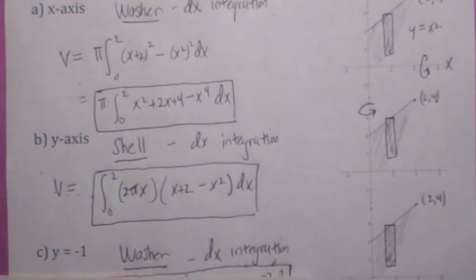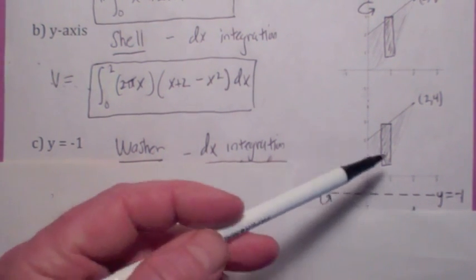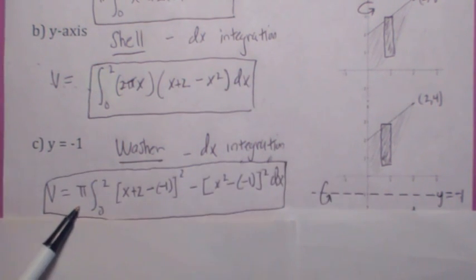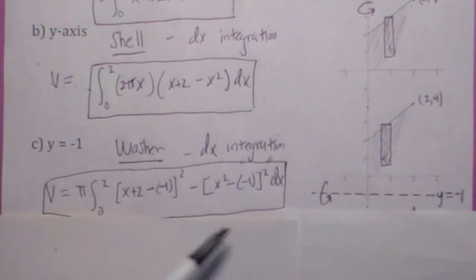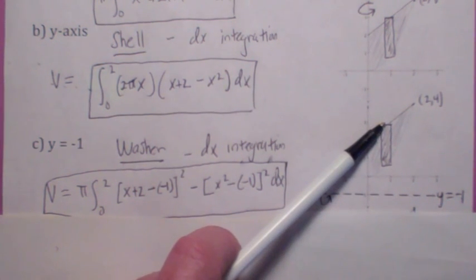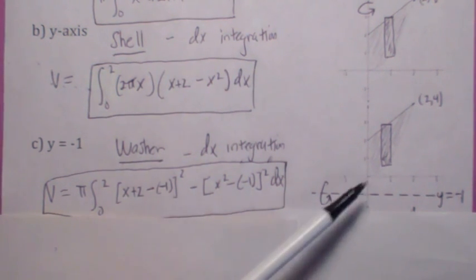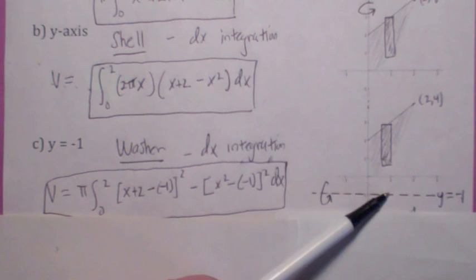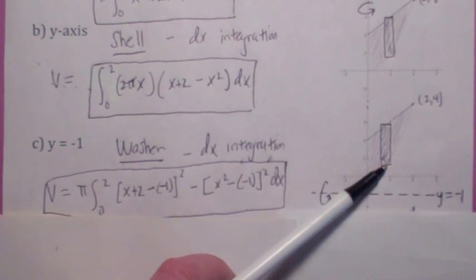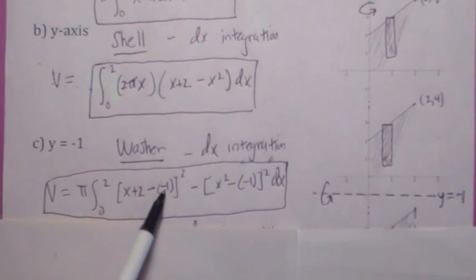What about along the line y equals negative 1? In this case, wouldn't it be easier to use the washer method again? You could do it all in one integral. It's π from 0 to 2 of the outer distance squared — which is x plus 2 minus negative 1, or x plus 3, squared — minus the inner distance squared, where the inner distance is x squared minus negative 1, so (x squared plus 1) squared. You could certainly simplify that.